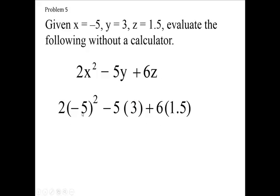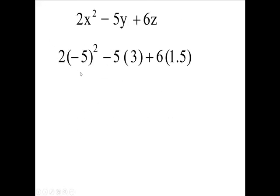So I have 2 times, what is negative 5 times negative 5? 2 times negative 5 times negative 5. Negative 5 times negative 5 is a plus 25.